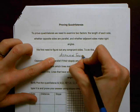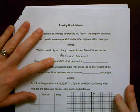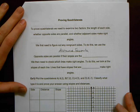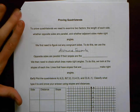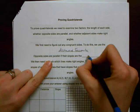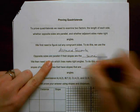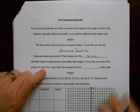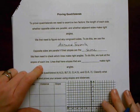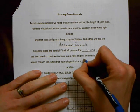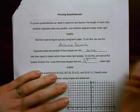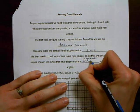And if you need a refresher on distance formula, you can go back to video one and see some examples of that worked out. And then the next thing we're going to do is look at the slopes. If opposite sides are parallel, then their slopes are going to be the same. We also need to check for right angles. To do this, we're going to look at the slope of each line.